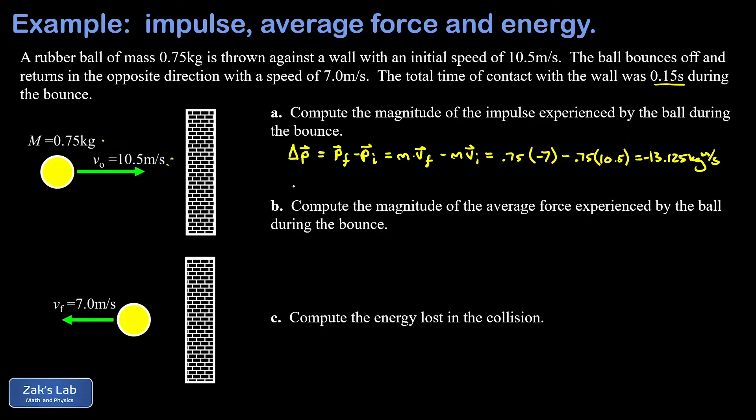In the question we were asked for the magnitude so we can just erase the minus sign, and I'll write the magnitude as absolute value of delta p, and that's 13.125 kilogram meters per second. That's it for part a.